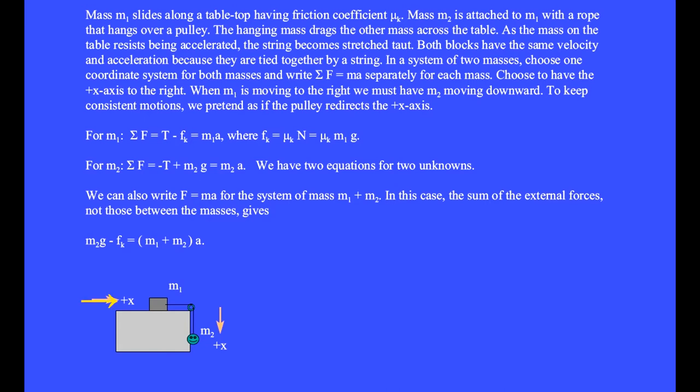In the system of two masses, choose one coordinate system for both masses and write the sum of the forces equals ma separately for each mass. Choose to have the plus x axis to the right. When m1 is moving to the right, we have m2 moving downward. To keep consistent motions, we pretend as if the pulley redirects the positive x axis downward for the hanging mass.